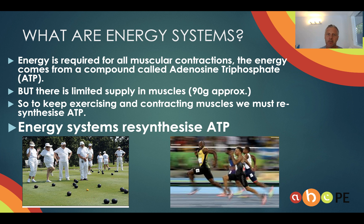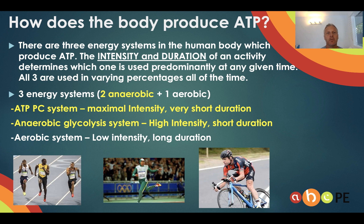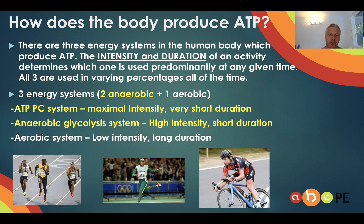Quick recap: energy systems are what will resynthesize ATP, which is the only substance in the body that will cause a contraction. Unfortunately we only have enough for one to two seconds of activity, so we use our energy systems to produce ATP. Intensity and duration will determine which of the three energy systems we use — we always use each one, it's just a matter of which one is dominant. The aerobic system is dominant during low intensity, long duration activities.